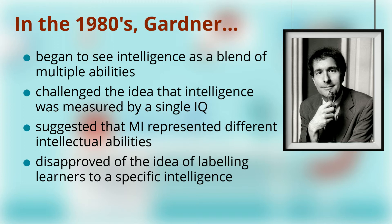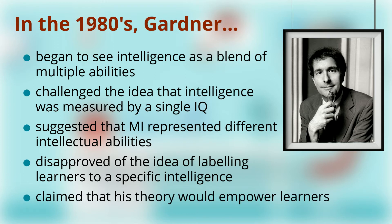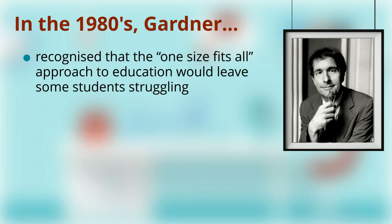Because he disapproved of the idea of labeling learners to specific intelligence, he claimed that his theory of multiple intelligences would empower learners by not restricting them to one modality of learning. He recognized that the one-size-fits-all approach to education would leave some students struggling and limit their potential.